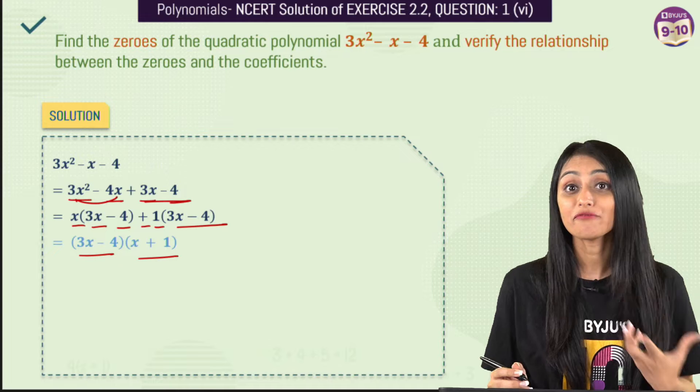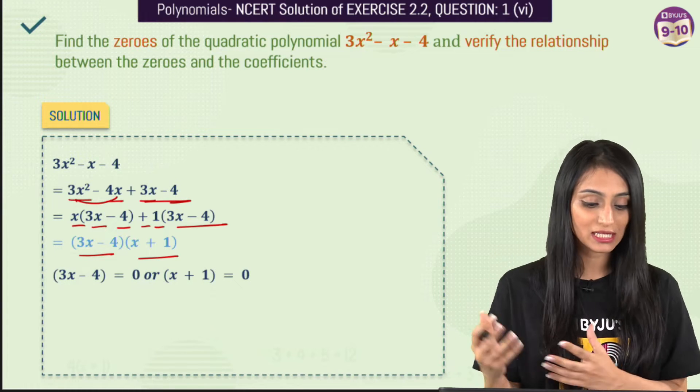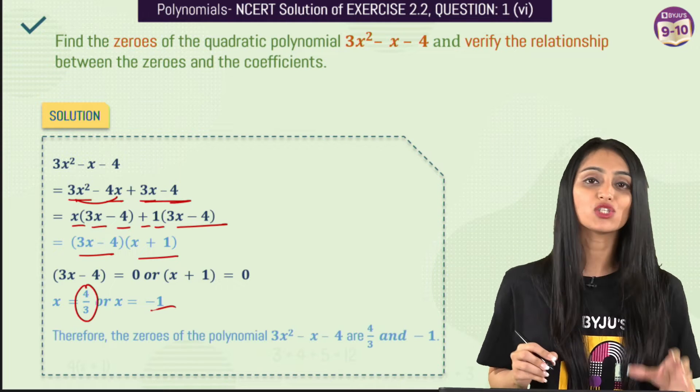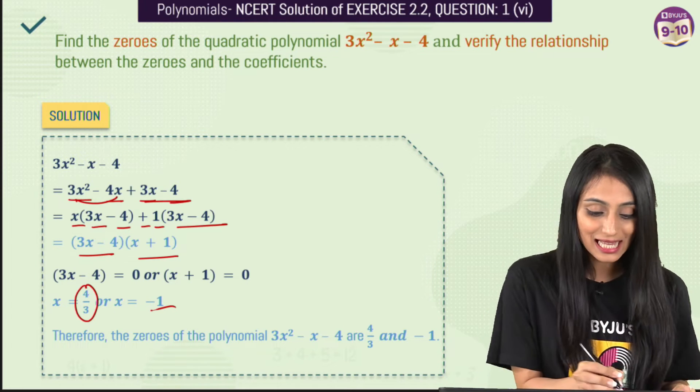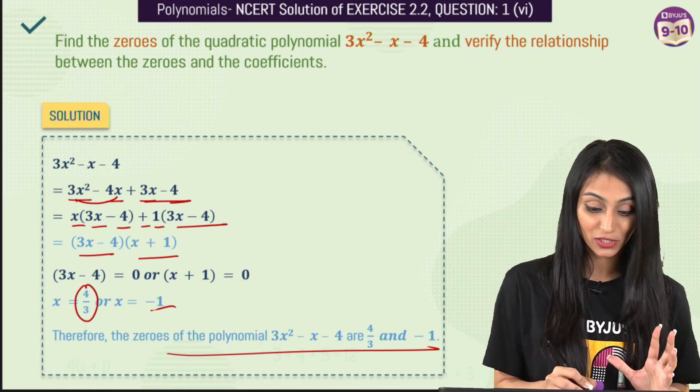So these are the factors of this quadratic polynomial. To find out the zeros we just have to equate them with zeros and what do we get? We have 4/3 and -1. So these two values of x are nothing but the zeros for this quadratic polynomial. So this is basically the first half of the question.